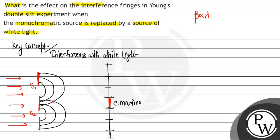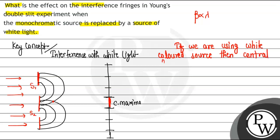If we are using a white colored source, the central fringe will be white — because all the rays of different wavelengths meet at the center with zero path difference, so their maxima all coincide at the center of the waveform.